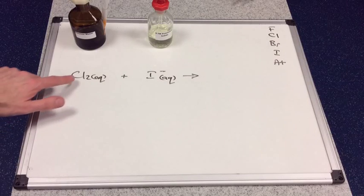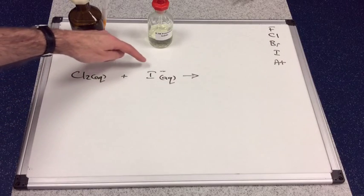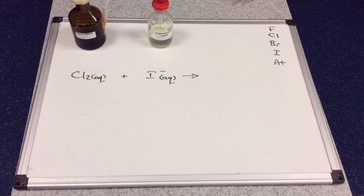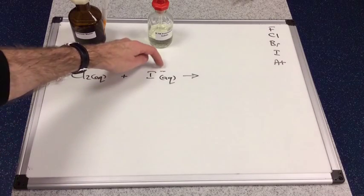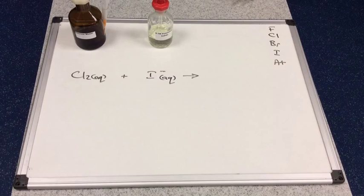The next one we look at is the reaction between chlorine and aqueous iodide ions. Just have a look in the top right hand corner there and ask yourself: can chlorine take this electron away from the iodide ion?